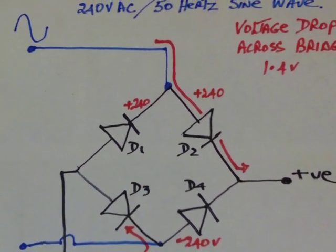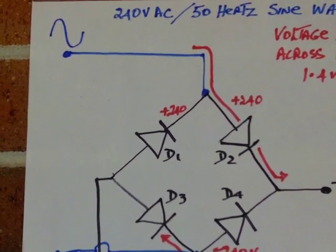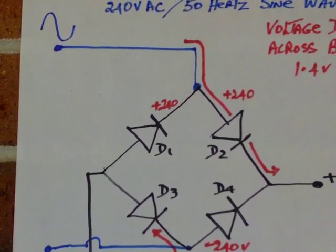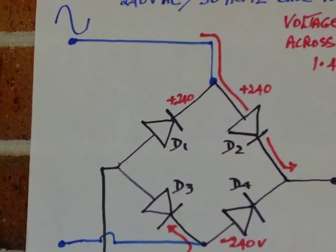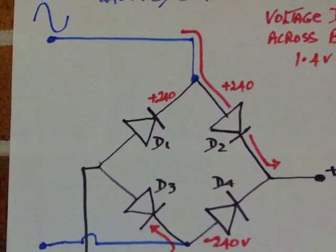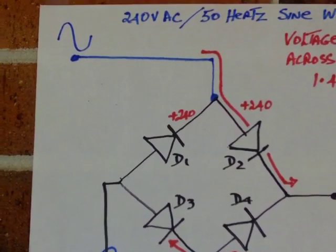At the same time you have got plus 240V on the cathode of D1, which is in a reverse biased condition. Therefore the PN junction is looking at plus 240V and it is not to conduct. Therefore the reverse voltage characteristics of the PN junction needs to sustain that voltage.